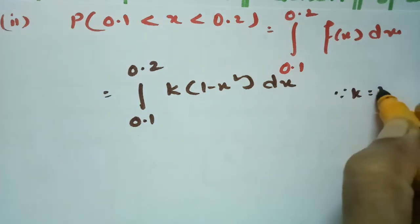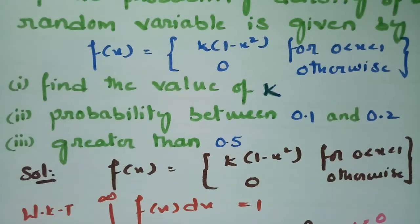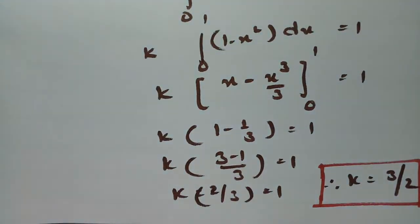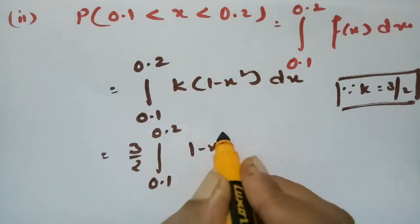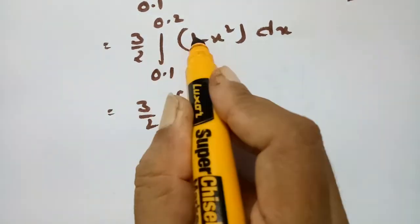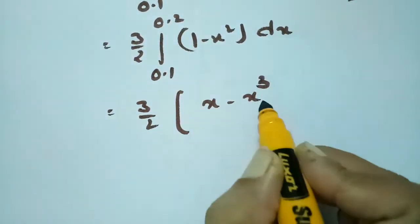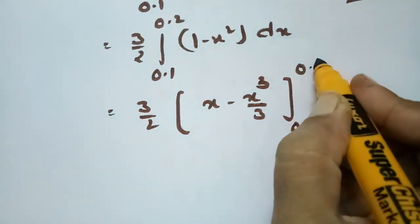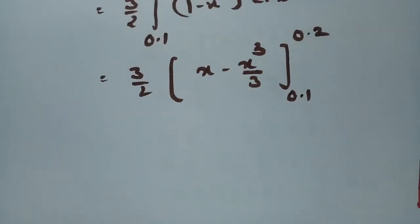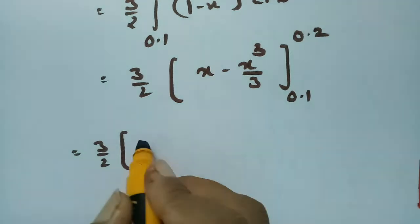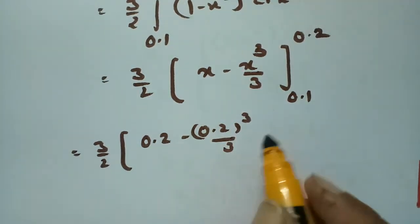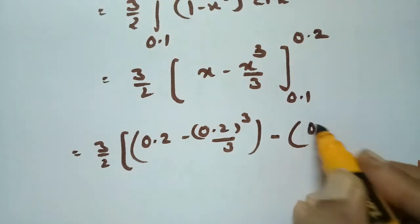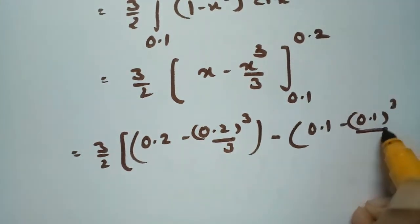Since we found k = 3/2, substituting gives: (3/2) × integral from 0.1 to 0.2 of (1 - x²) dx. This equals (3/2) times [x - x³/3] evaluated between limits 0.1 and 0.2. Substituting the upper limit: (0.2 - 0.2³/3), and the lower limit: (0.1 - 0.1³/3).